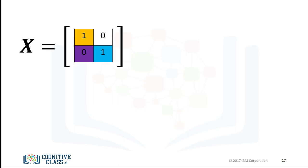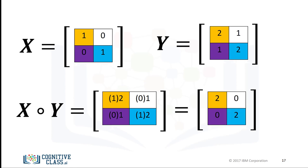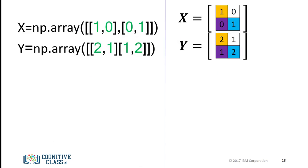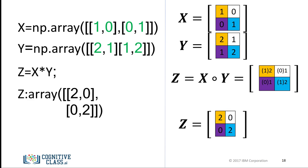Multiplication of two arrays corresponds to an element-wise product, or Hadamard product. Consider array x and array y. Hadamard product corresponds to multiplying each of the elements in the same position — multiplying elements contained in the same color boxes together. The result is a new matrix that is the same size as matrix x or y, where each element is the product of the corresponding elements in x and y. We can find the products of two arrays x and y in one line and assign it to the variable z. The result is identical to the Hadamard product.